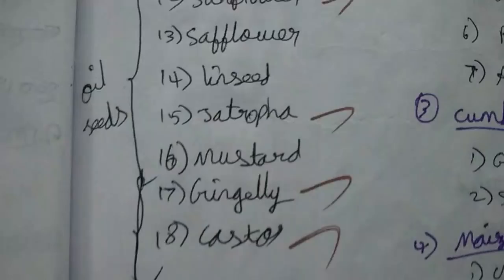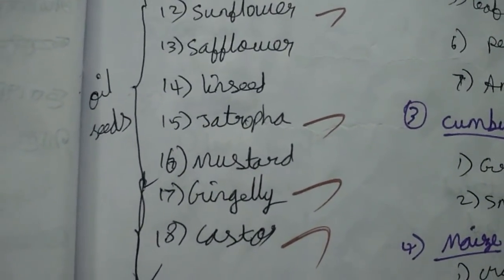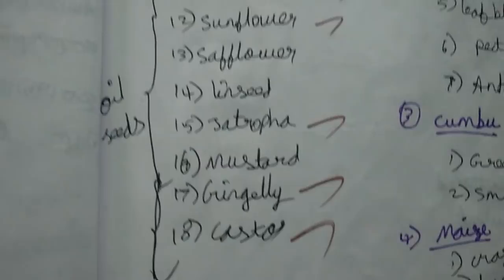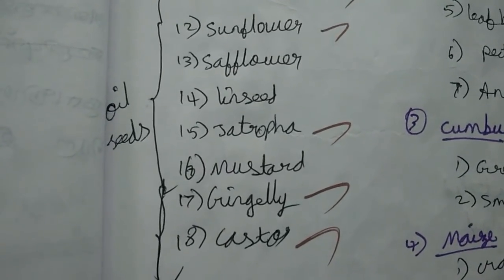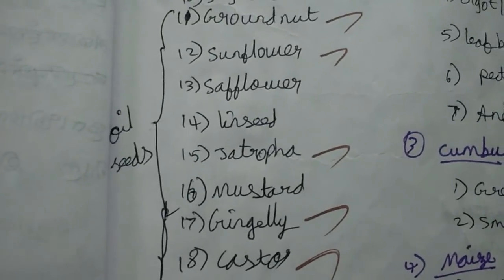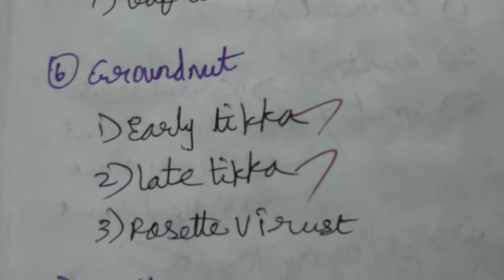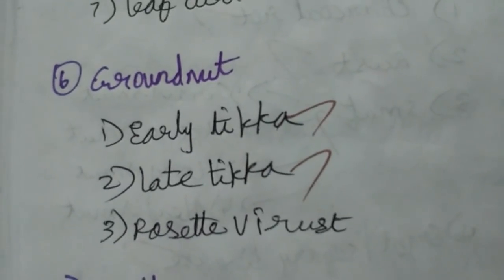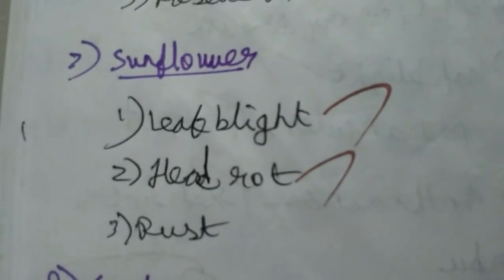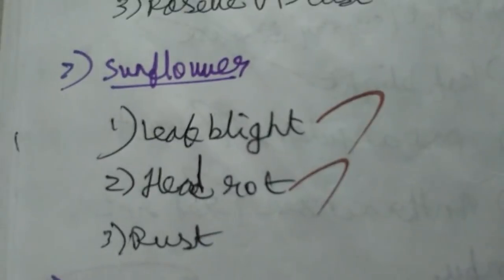In oil seed crops, we have two major crops: groundnut and sunflower. In groundnut, the diseases are early leaf spot and late leaf spot — these two are important. Next, sunflower has leaf blight and head rot. Head rot is a significant disease of sunflower.